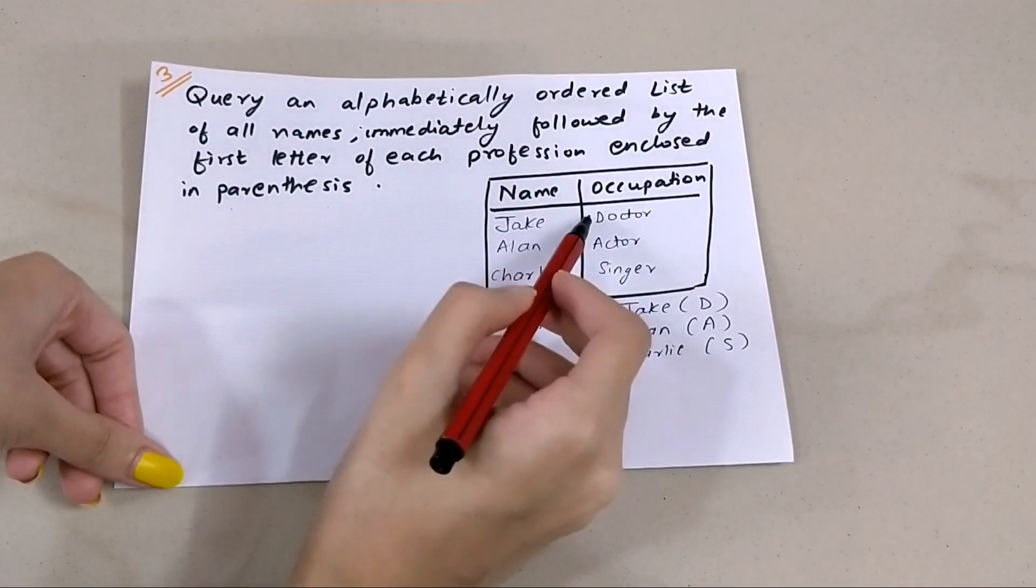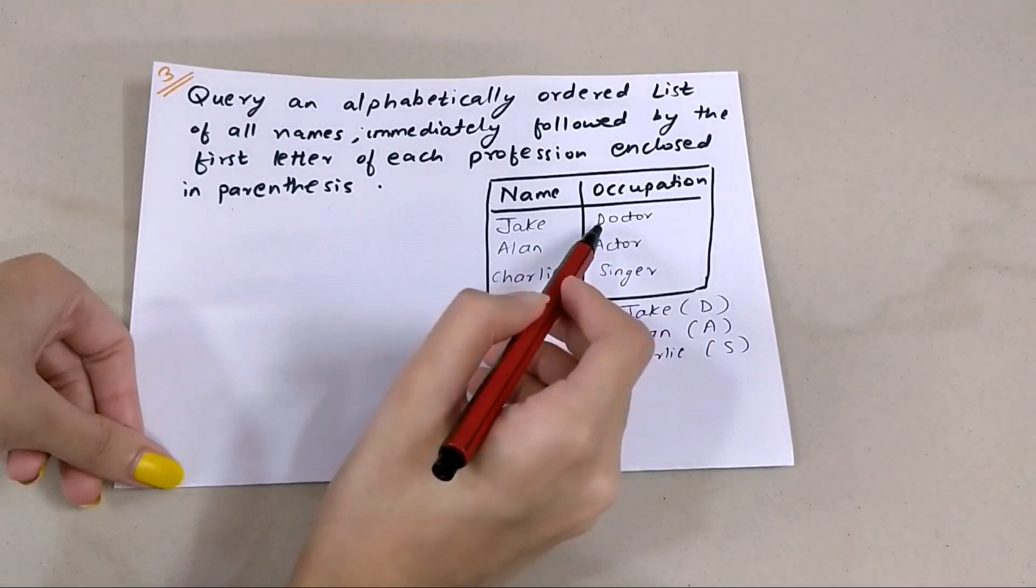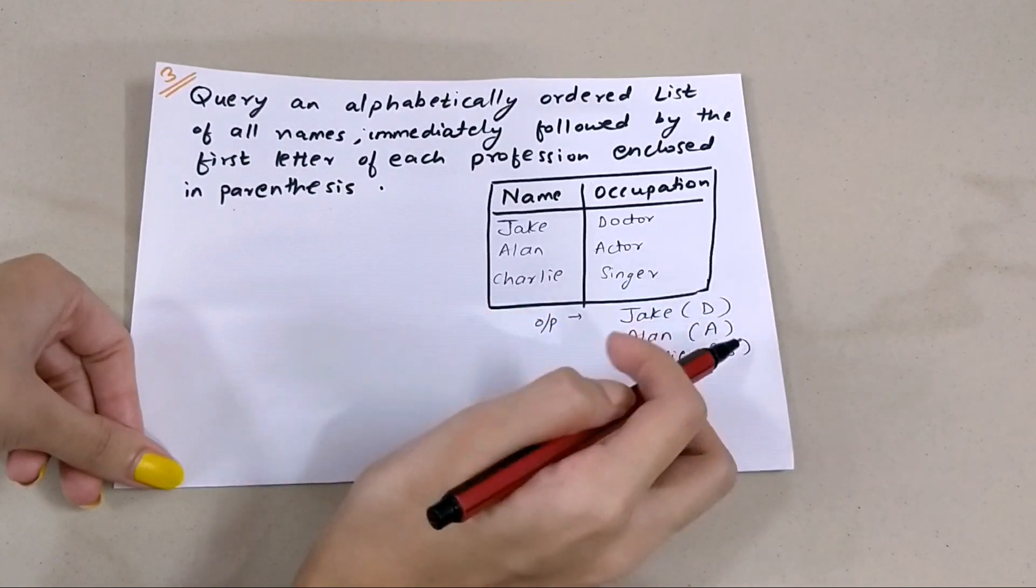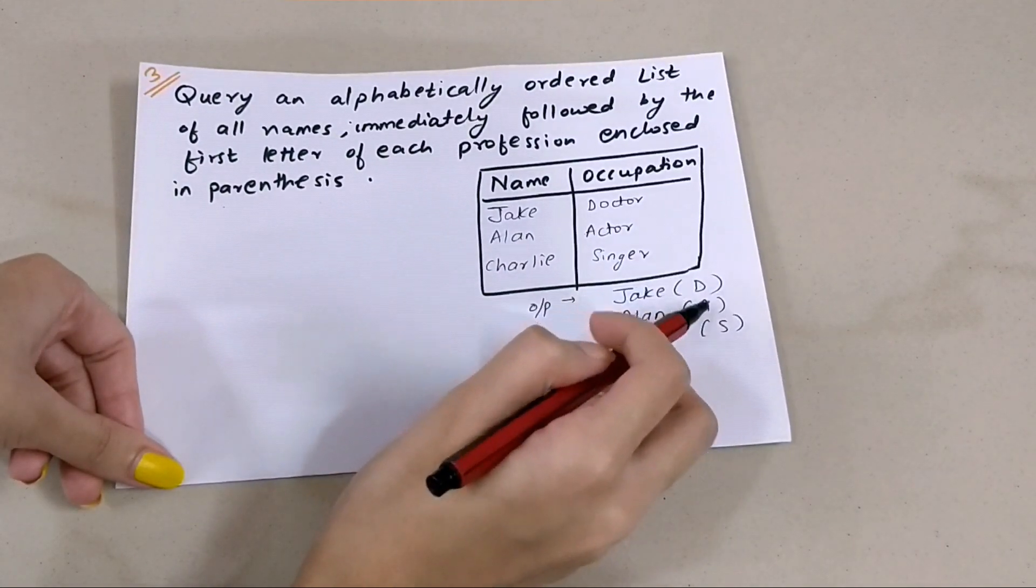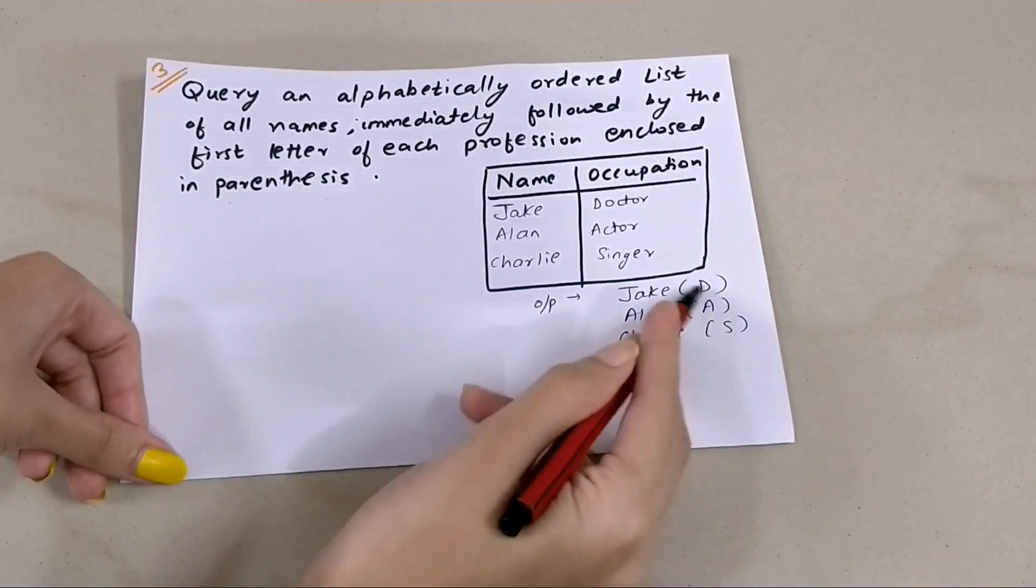And then the first letter of the occupation. So if it's doctor then D, actor then A, singer then S, all of it in parentheses. This should be the output.